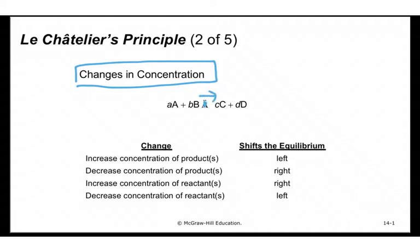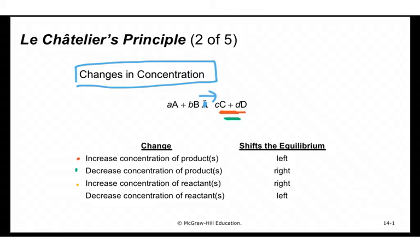If I increase the concentration of a product, the equilibrium will shift to the left to reduce that stress introduced to the system. If I decrease the concentration of my products, equilibrium will shift to the right. If I increase the concentration of reactants, equilibrium will shift to the right. And if I decrease the concentration of reactants, equilibrium will shift to the left.